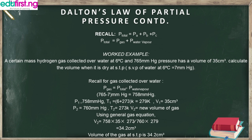Our T₁ is 6 degrees Celsius, which we convert to Kelvin by adding 273, giving us 279 K. Our V₁ is 35 cm³. Recall that the question asks us to calculate the volume when dry at STP. STP stands for Standard Temperature and Pressure: standard temperature is 273 K and standard pressure is 760 mmHg.